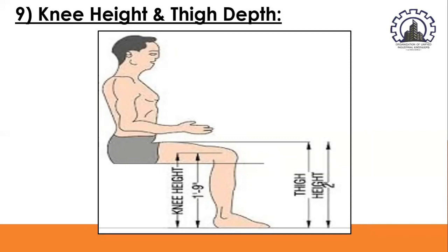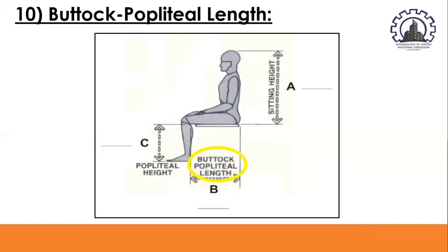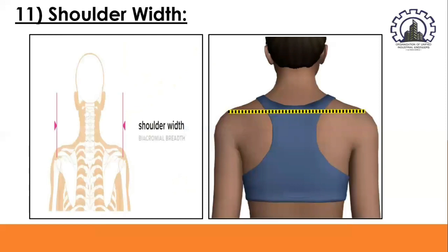Buttock-popliteal length is the distance from the buttocks to the back of the knee, used to determine the maximum allowable seat depth such that seat depth does not exceed the buttock-popliteal length of short operators. Shoulder width refers to the widest distance across the shoulders, used to determine the minimum width of narrow doorways, corridors, etc., to provide clearance for those with wide shoulders.